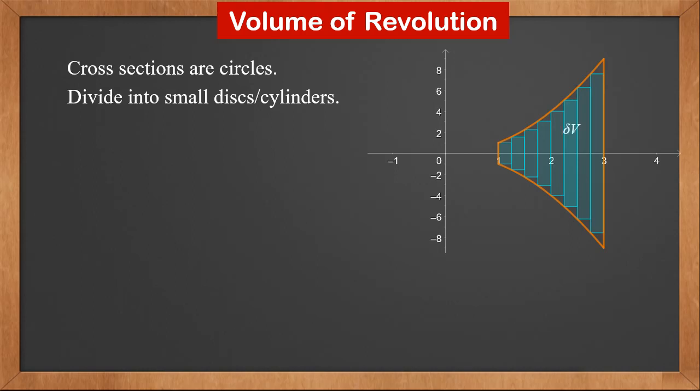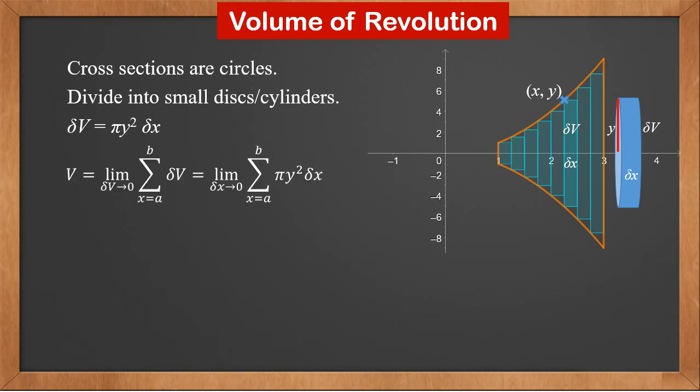Each small disk's volume is delta v, and its height is delta x. The coordinates of the upper left vertex are x, y. So the small disk's volume delta v is pi y squared delta x. The volume V can be estimated as the sum of all these delta v's, and it's the limit of the sum as delta x approaches 0. This is the limit of the sum of pi y squared delta x from a to b when delta x approaches 0.